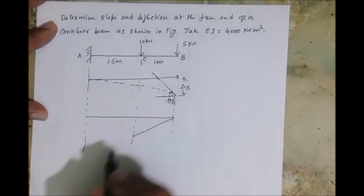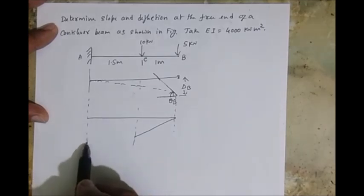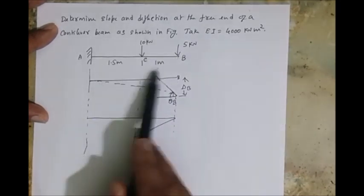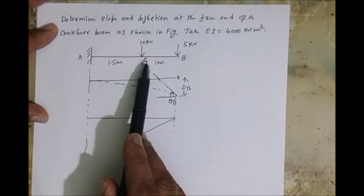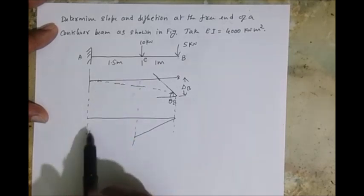And then at the end A, the total bending moment because of these two loads is five into 2.5 plus ten into 1.5, so it overall works out to be 27.5.